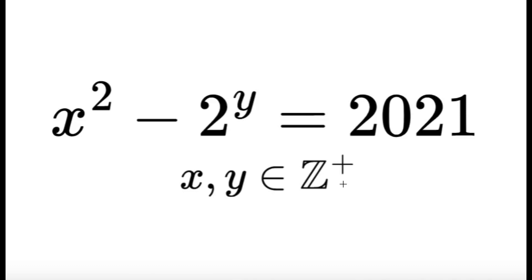Hello, it's Tumplet here. Here's an item on number theory. Given that x and y are positive integers satisfying x squared minus 2 raised to y equals 2021, find all possible values of the ordered pair (x, y). Pause this video if you'd like to give this item a try, but if you're done, let us dive into the solution.